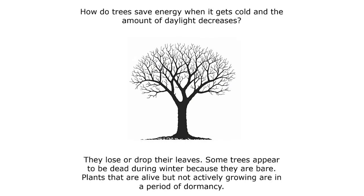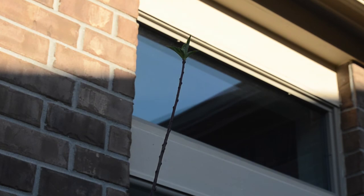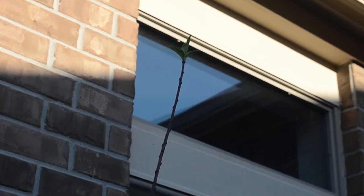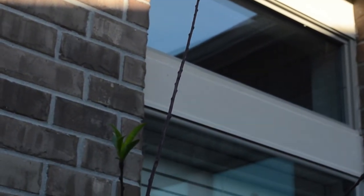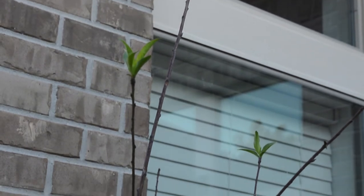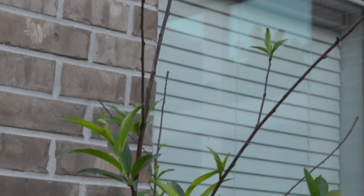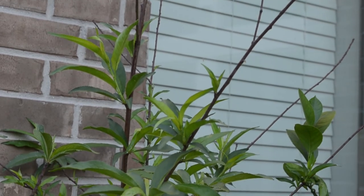How do trees save energy when it gets cold and the amount of daylight decreases? Well, some of them lose or drop their leaves. Some trees appear to be dead during winter because they are bare. Plants that are alive but not actively growing are in a period of dormancy. Even plants are affected by the weather. This peach tree starts out looking like sticks, but leaves begin to sprout and eventually the entire tree will fill up. It uses clues of the weather getting warmer to get out of dormancy and become active again.